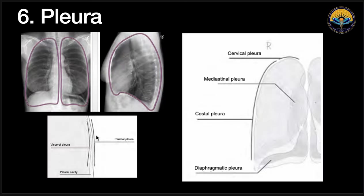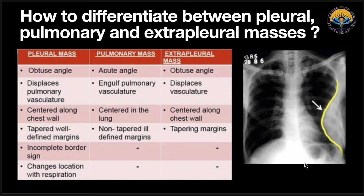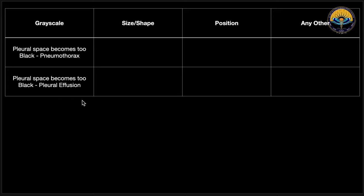Coming to the pleura: we have the parietal pleura, visceral pleura, and in between them the pleural cavity. The parietal pleura includes the cervical pleura, mediastinal pleura, costal pleura, and diaphragmatic pleura. To determine whether a mass is arising from the pleura or from the lung: if the angle between the mass and the chest wall is obtuse, it is extrapleural or pleural in origin; if the angle is acute, it is arising from the lung. An obtuse angle could also arise from the mediastinum.